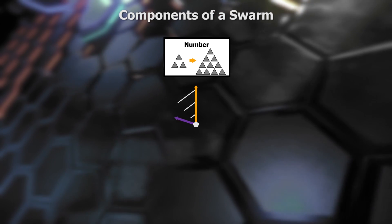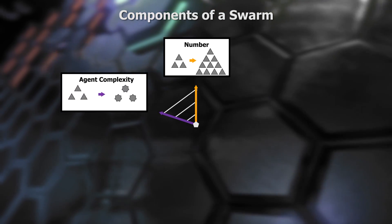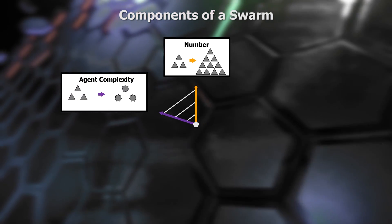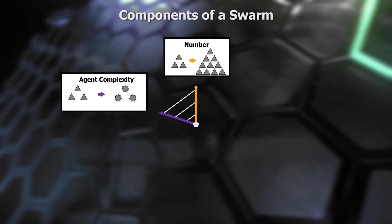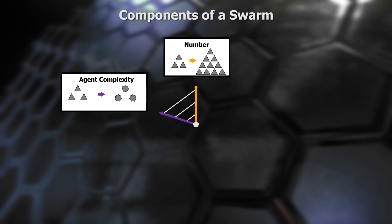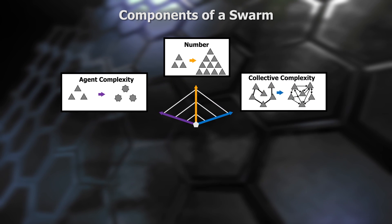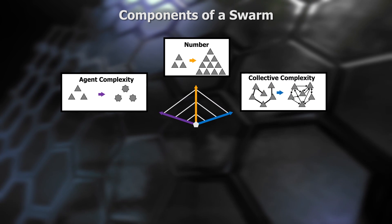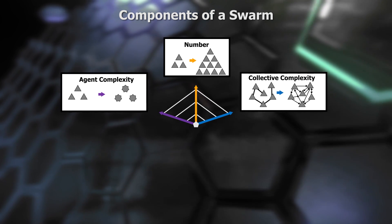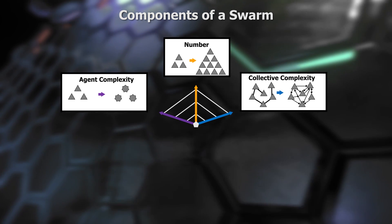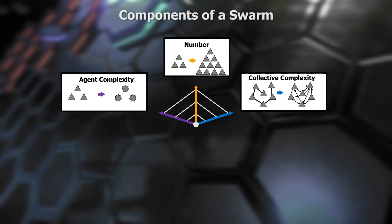There's a facet associated with how complex individual robots are — we call that the agent complexity. But even beyond that, we're interested in how these large teams potentially interact with one another. We call that the collective complexity: how complex are the interactions, the communications, the sensing that they're all able to do in a distributed way.